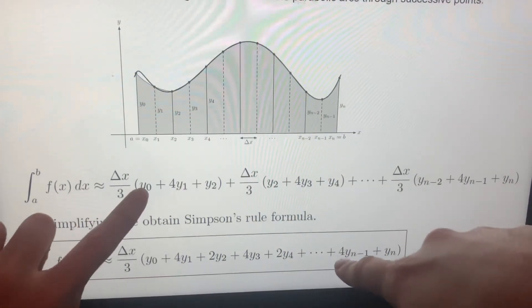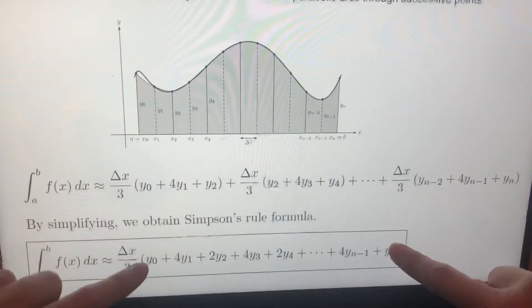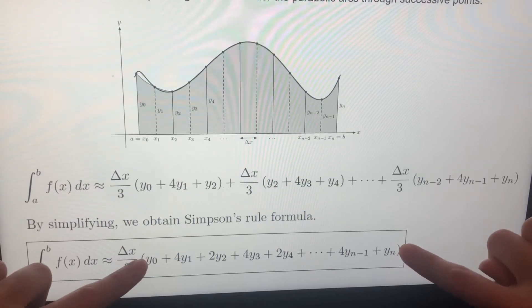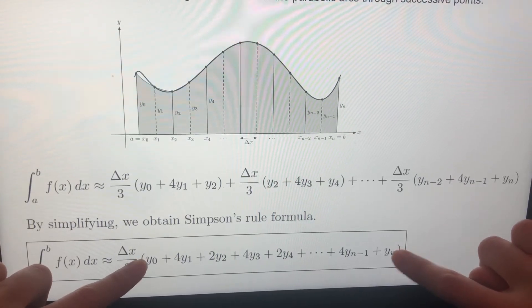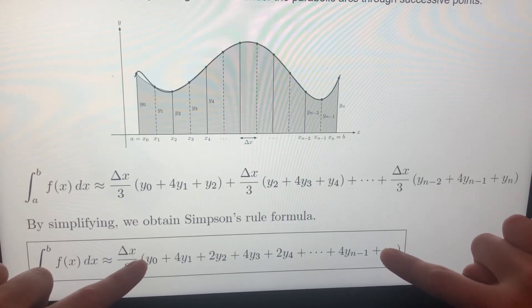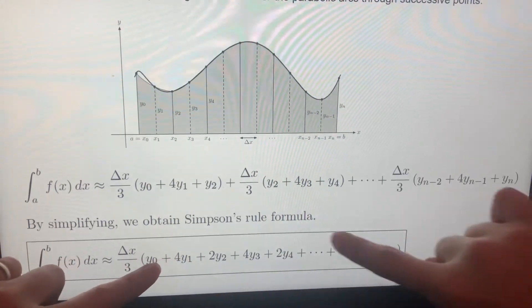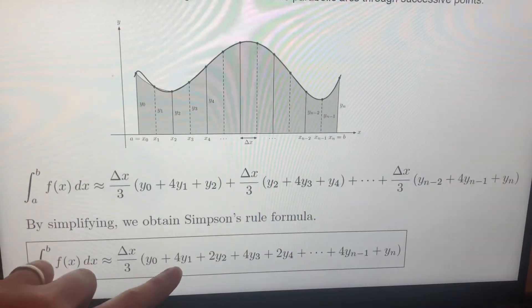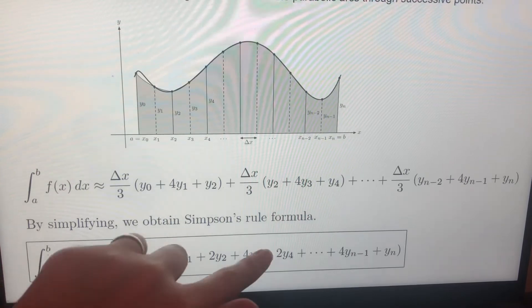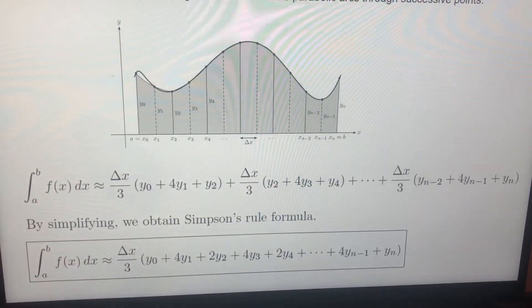As you can see, only the first and the last expressions are alone, which they have one as coefficient. And after that, the intervals are going like four, two, four, two coefficients. Remember that this is how Simpson's rule is working.